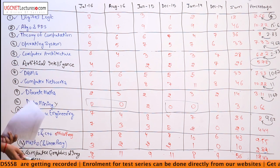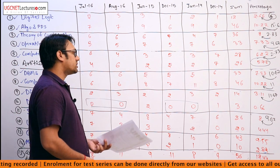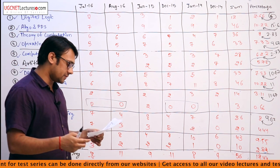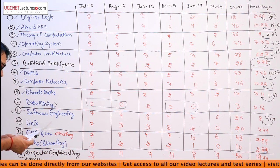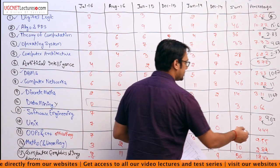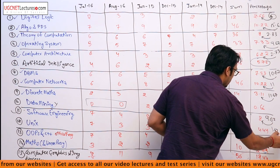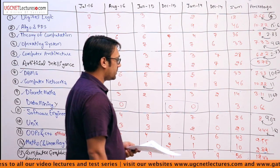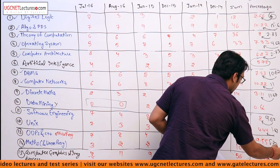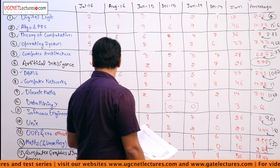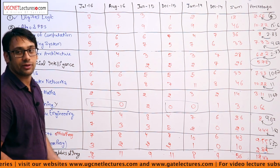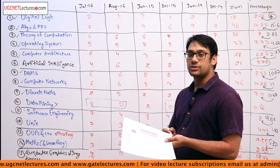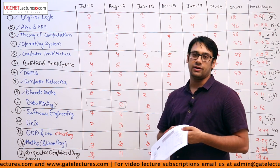We have a combined analysis for Paper 2 and Paper 3, and we will see what subjects are important and which ones have less percentage. We have UNIX, which was initially 1.67% and has now decreased to 4.44%. Then we have OOPS and C++, which was initially 5.33% and has increased to 9.55. Looking at previous papers, they are not only asking questions from OOPS and C++, they are also asking questions from Java as well as Fortran or other languages. So this portion is mostly about programming methodology.